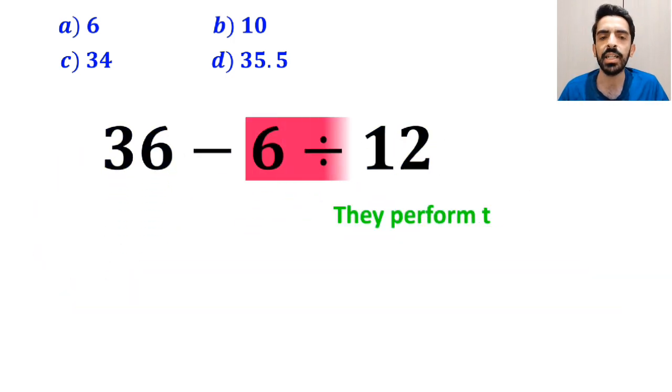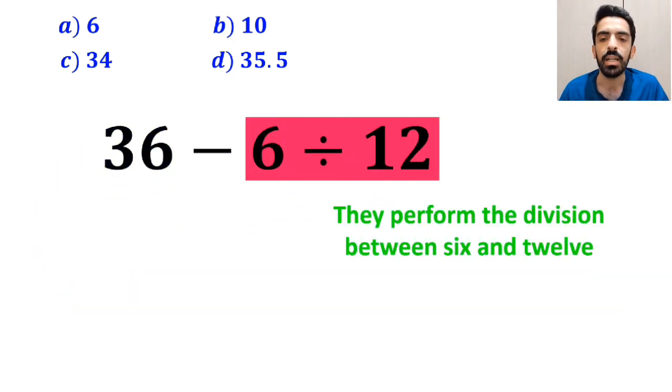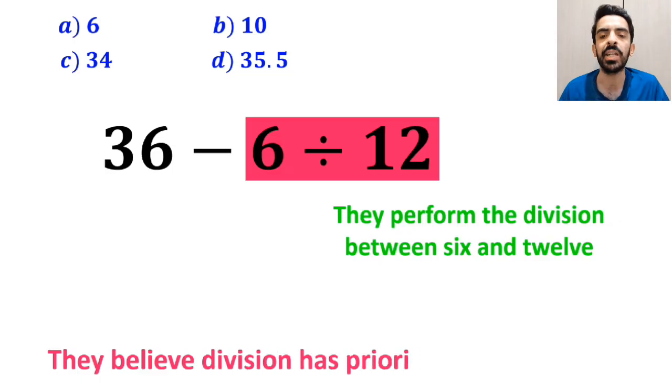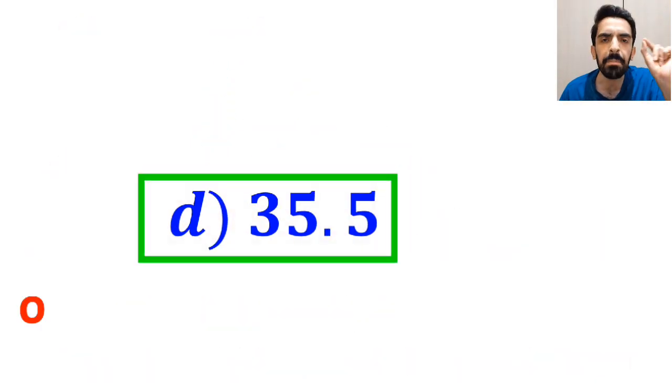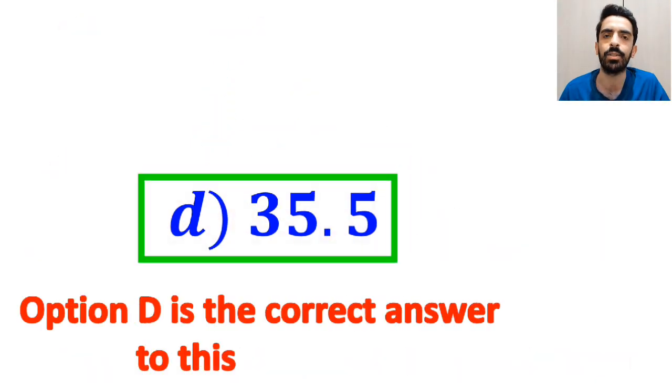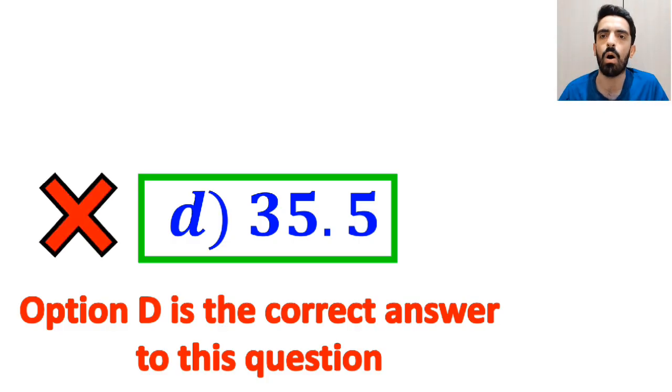Next, they perform the division between 6 and 12, since they believe division has priority over subtraction. And they rewrite this expression as 36 minus 0.5, which ultimately gives them the answer 35.5. And immediately, they conclude that option D is the correct answer to this question. However, this answer is absolutely wrong.